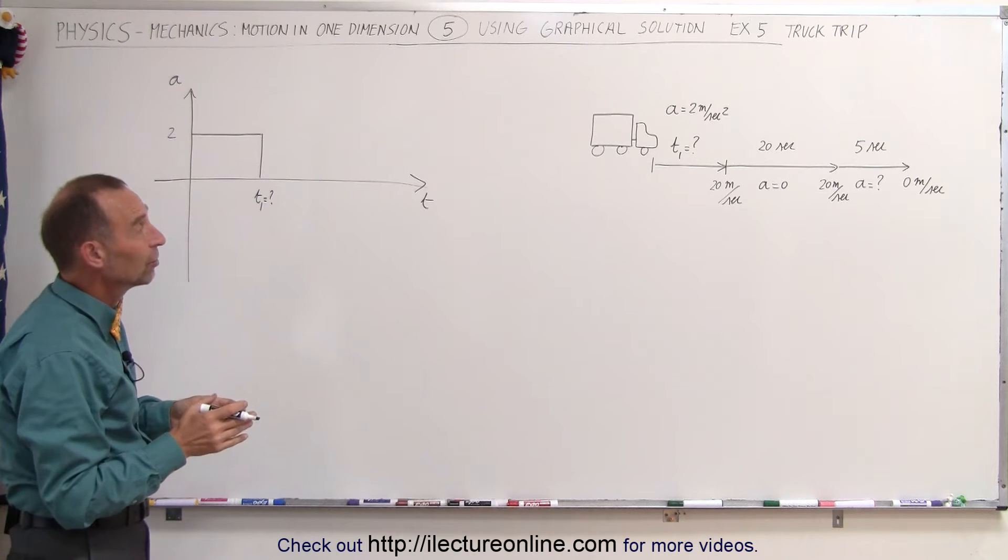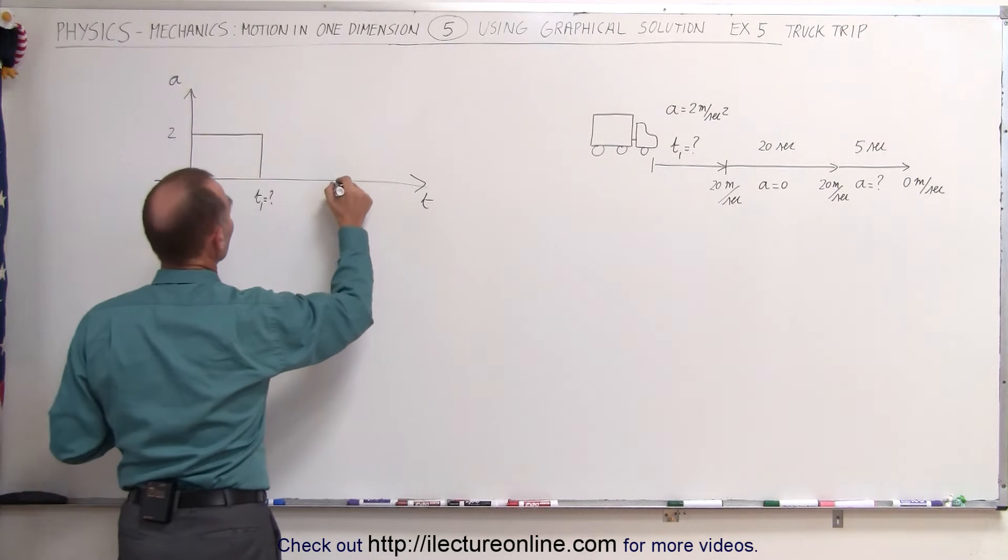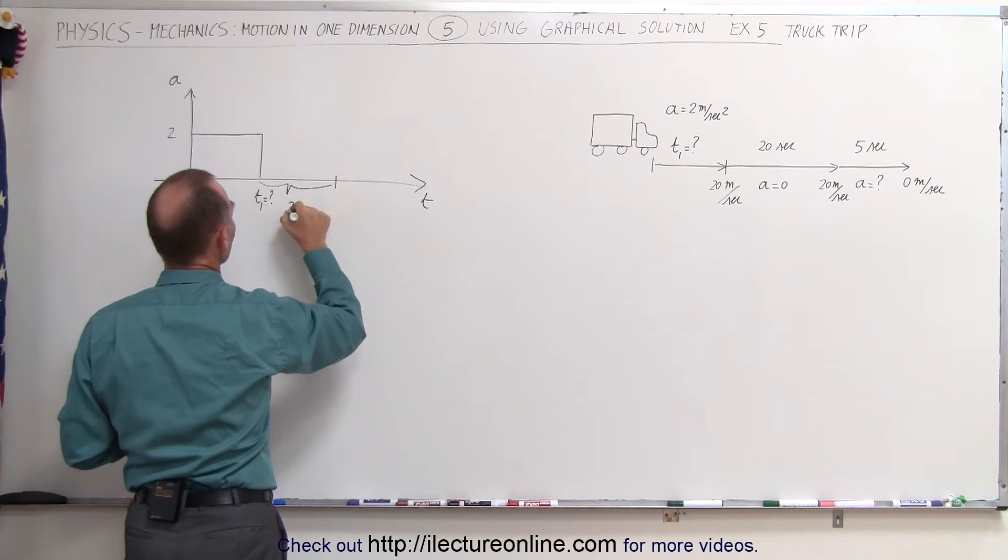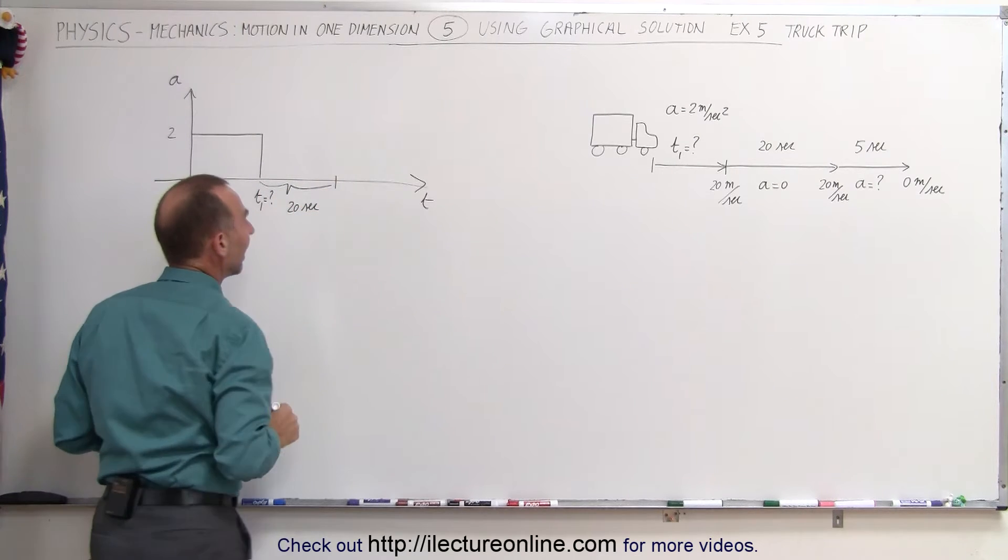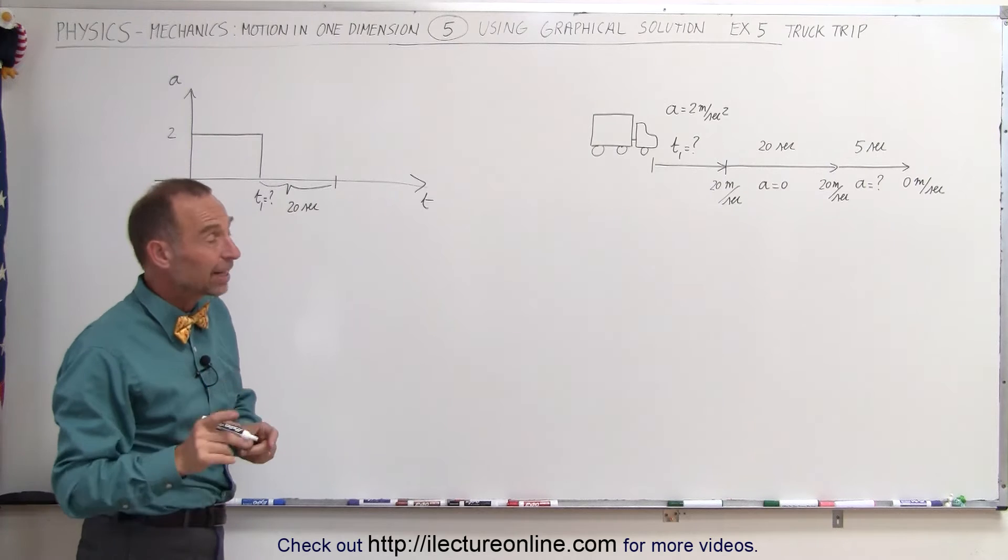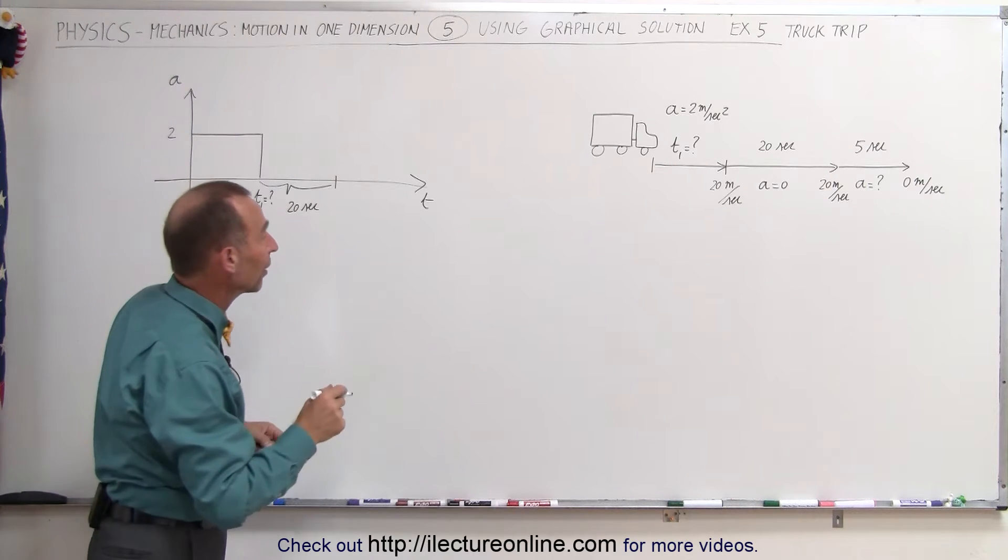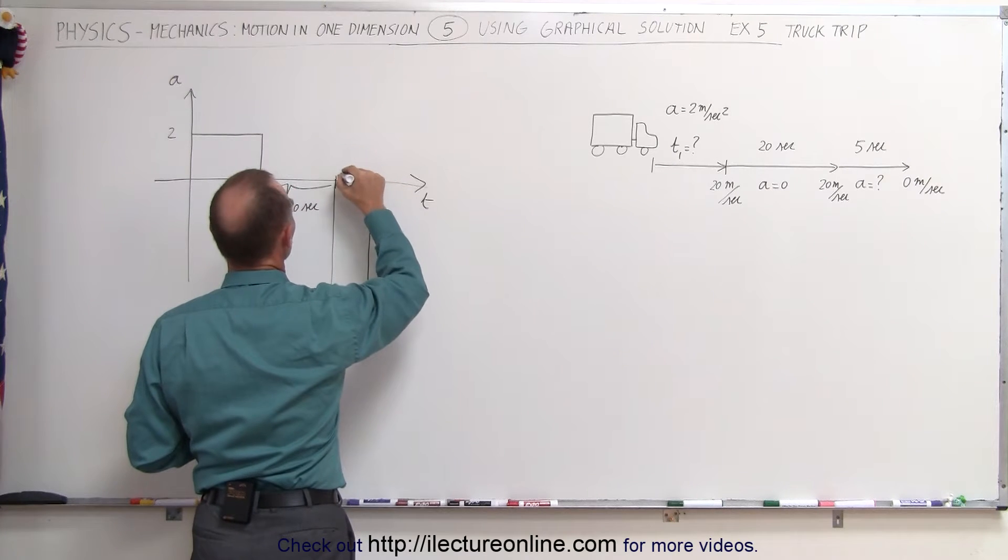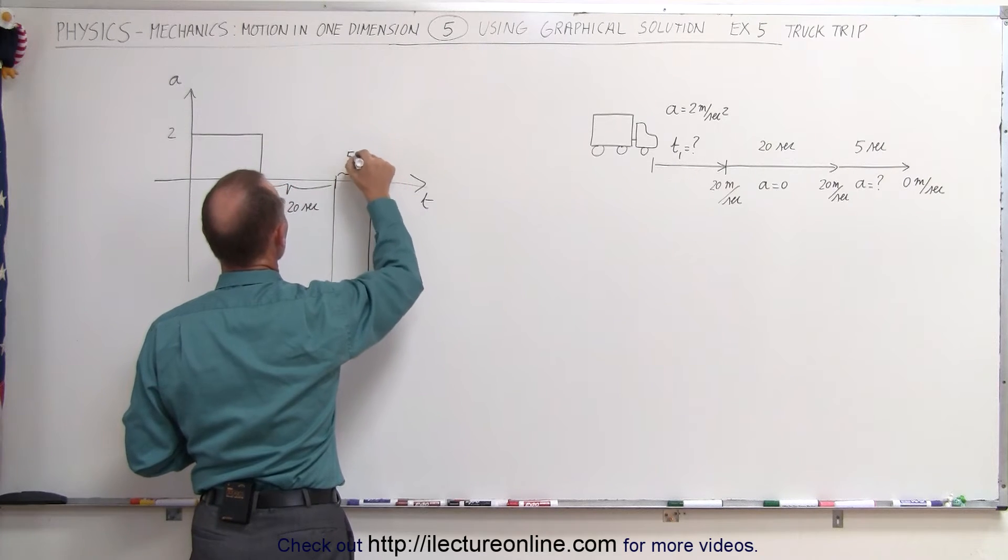Then for the next 20 seconds there's zero acceleration. So the next 20 seconds, from there to there this period here is a 20 second period. And then for the next five seconds there's a negative acceleration back down to the velocity of zero. So we have a negative acceleration for the next five seconds. So this here would be a five second period.